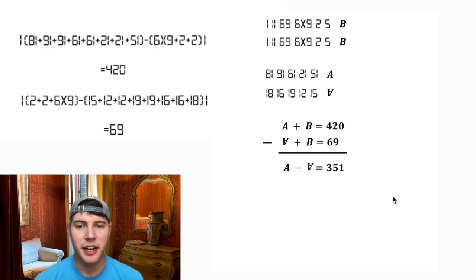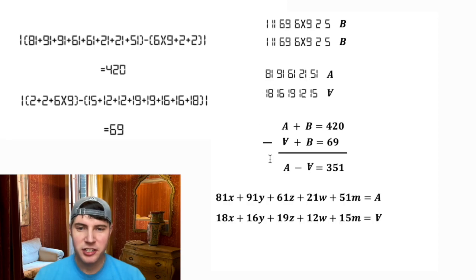So then I looked at each of these numbers and I came up with these two equations. I want some number of 81s plus some number of 91s plus some number of 61s and so on to be my A. Then I'd want the same number of 18s plus the same number of 16s plus same number of 19s to be my upside down A.